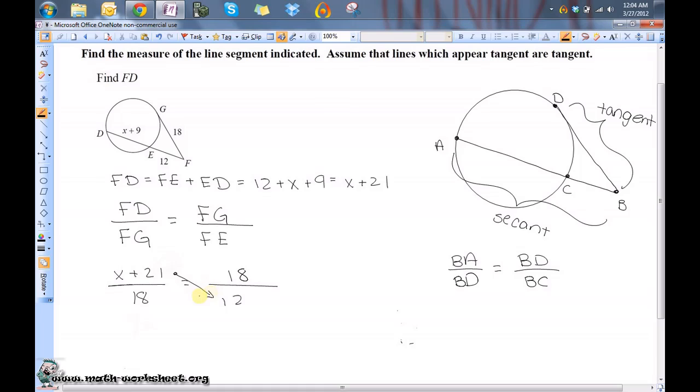I'm going to do that by cross-multiplying, which is known as the means extreme theorem. We're using what is known as the means extreme theorem, which means you're going to multiply the means, which are the 18s, and the extremes, which are these two here. So notice it's just going to, because this is a geometric mean, be 18 squared and 12 times x plus 21.